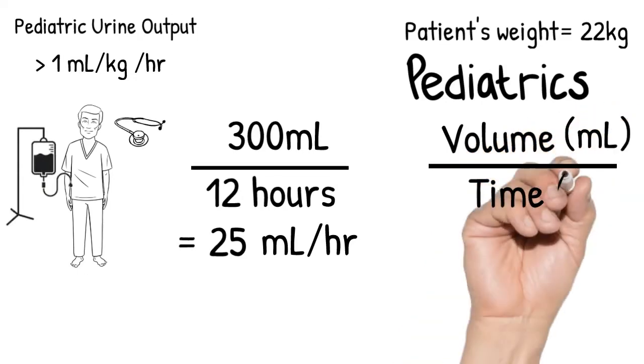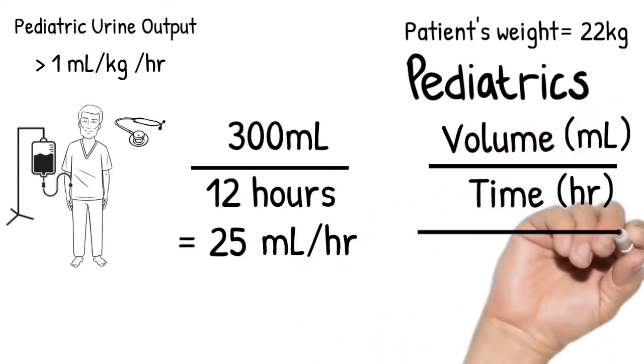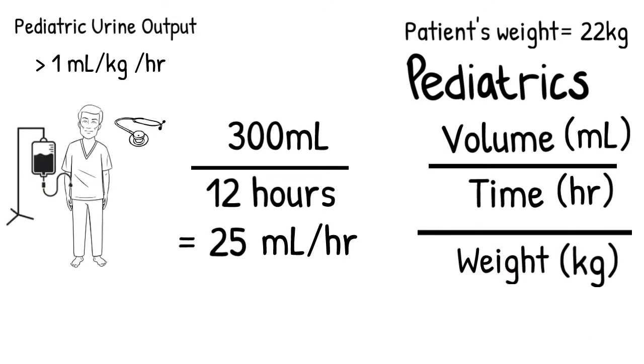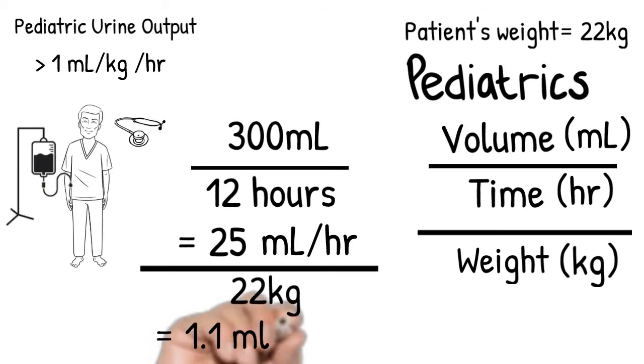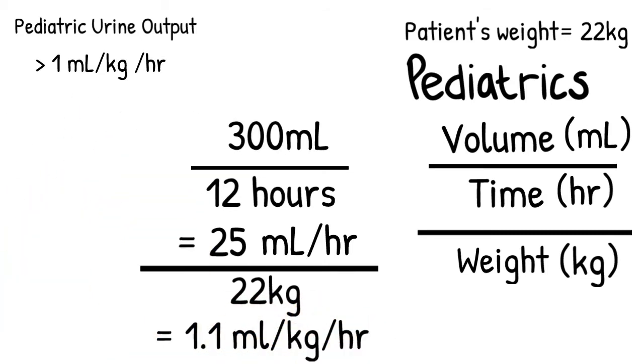It's volume over time over patient's weight. Remember that we incorporate patient's weight in calculating for pediatric urine output. So let's divide 25 mls per hour by 22 kilograms. And we get how much? 1.1 mls per kilogram per hour. This is greater than 1.